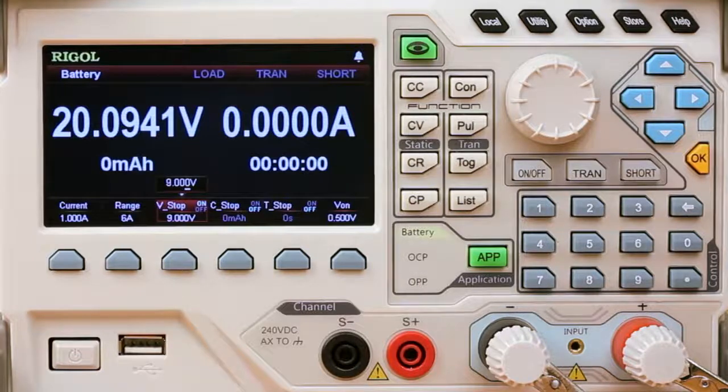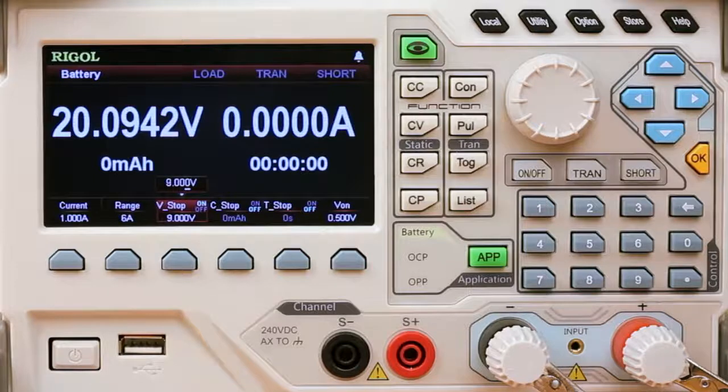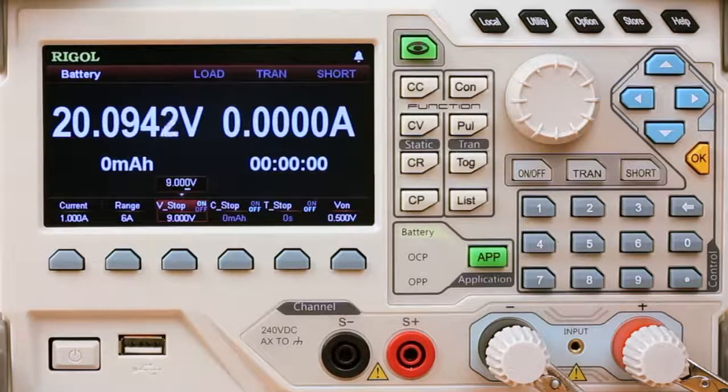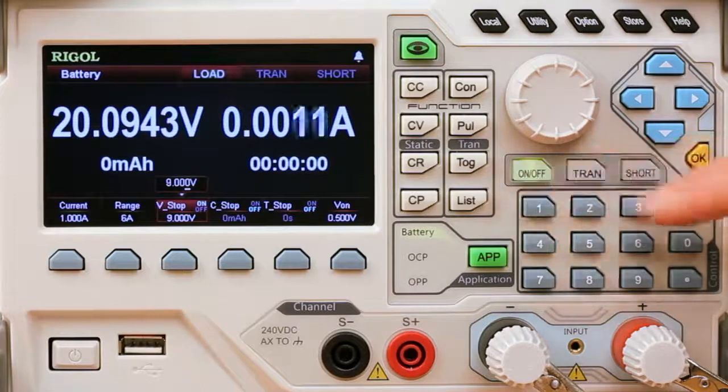You can also set capacity limits in milliamp hours or a time stop as well. The voltage on is an important one to remember. You want that to be lower than your normal battery voltage because the test will not start until it sees voltage above that. Alright, let's go ahead and start this test.